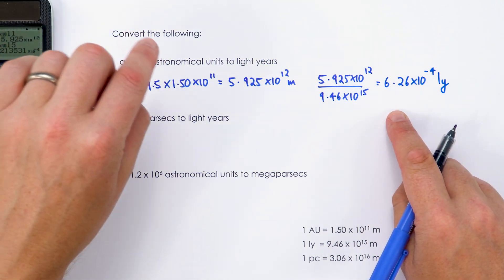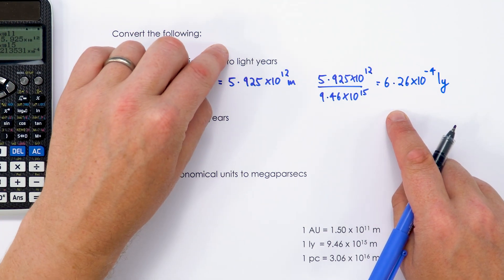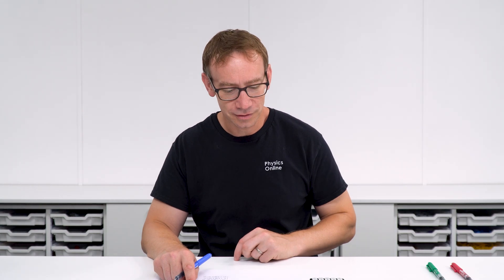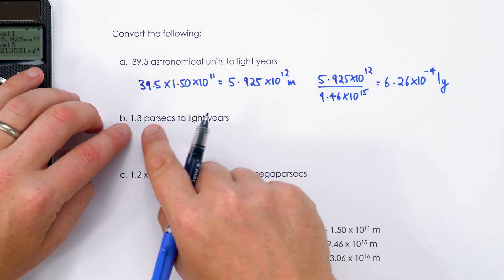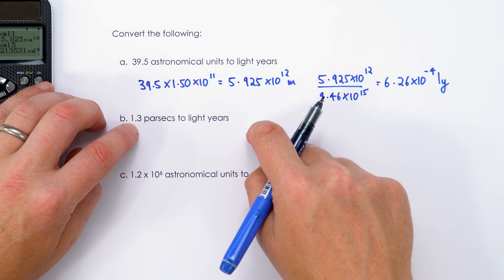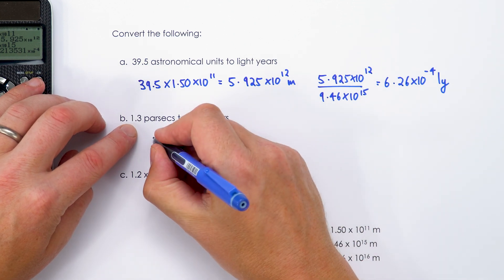So that's the first one. I converted from astronomical units into metres and then metres into light-years. So we're going to do something similar for the second one. We're going to convert from parsecs to metres and then metres to light-years. So if you've got 1.3 parsecs...